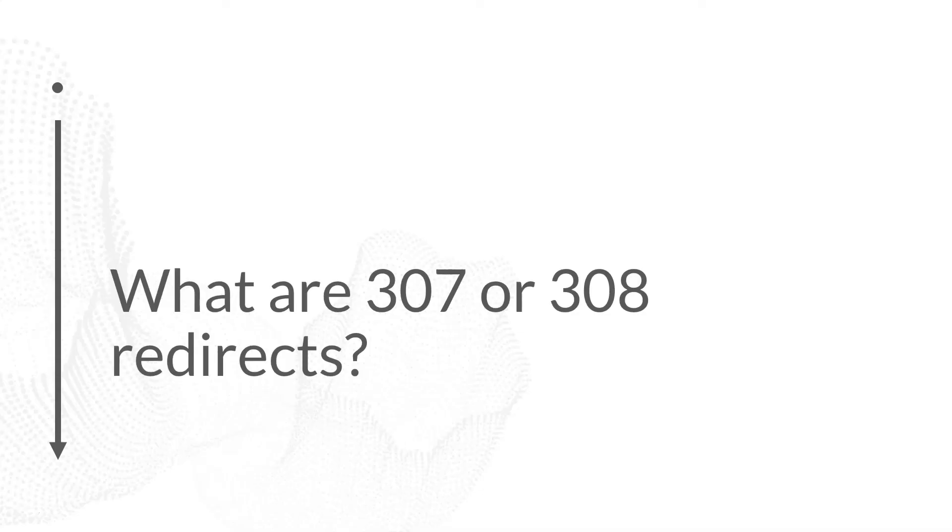What are 307 or 308 redirects? 307 and 308 redirects are part of HTTP 1.1 — new response codes to describe redirects. For the most part, these aren't fully supported by Google yet, so I still recommend using 301 or 302 instead. When we get to it, 307 is the new version of a temporary redirect, equivalent to a 302, while 308 is the new version of a permanent redirect, equivalent to a 301.